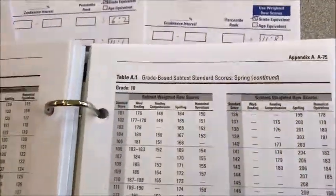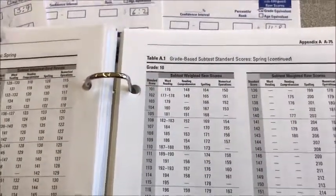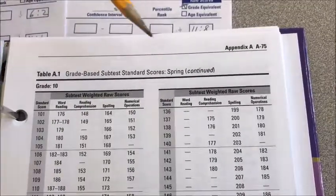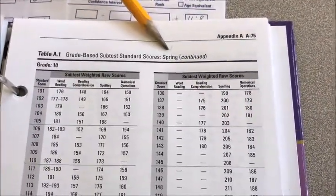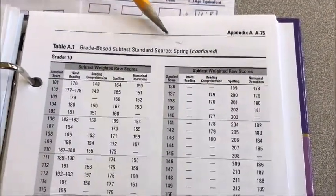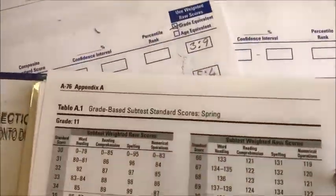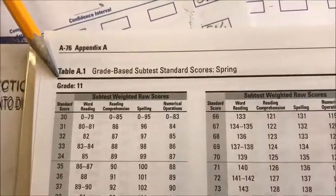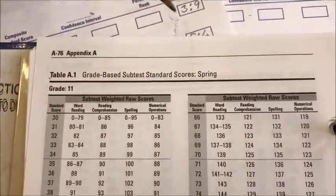We're going to be looking at spring because the student we assessed is in grade 11 and it's spring. So this is grade 10 — we need to flip it over to grade 11. There is the grade 11 subtest standard score for spring.